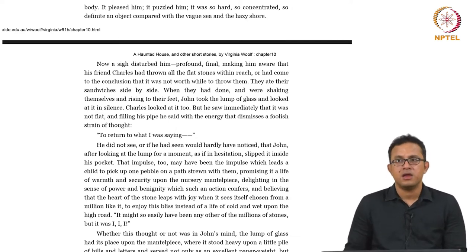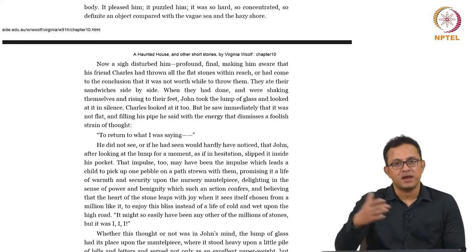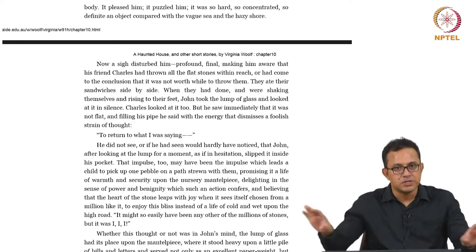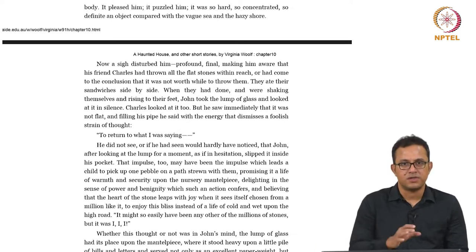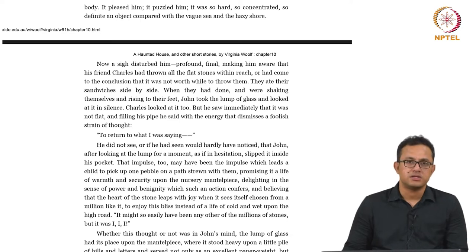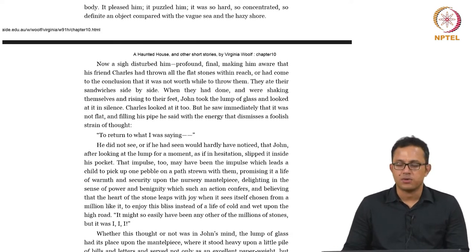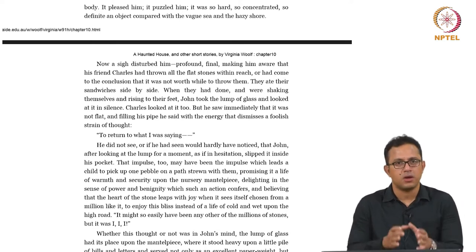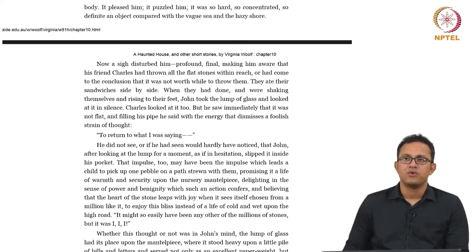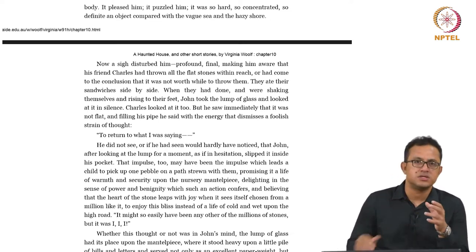One character deviates from the mainstream masculinist progressive narrative of political ambition and ends up being an irrational collector of solid objects, while the other remains in the mainstream narrative. This divergence is important for us to map. We also talked about — and will return to — the human obsession with objects and materials, which can be interestingly mapped with Material Engagement Theory.